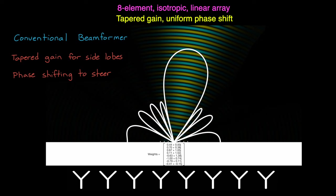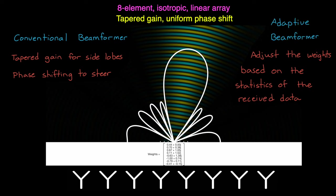But in contrast to the conventional approach, we can also use an optimization algorithm to adjust the weights based on the statistics of the received data. That is, we can calculate the weights that will produce some optimal pattern given the actual environment. And this is adaptive beamforming.